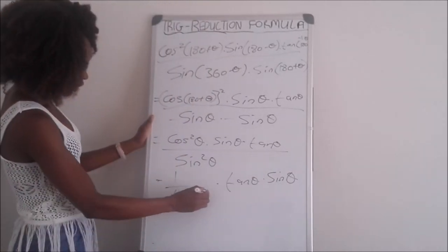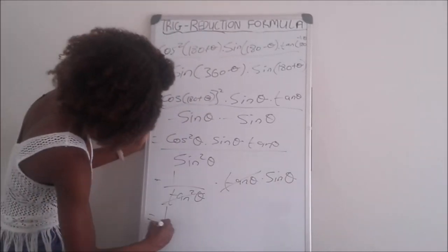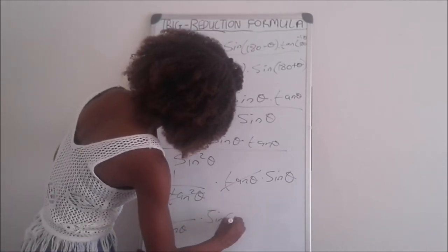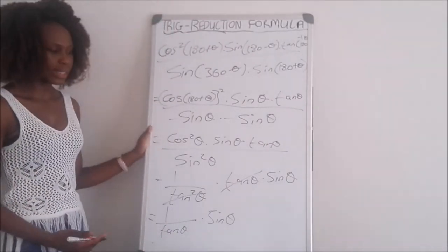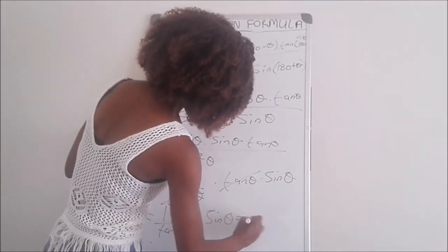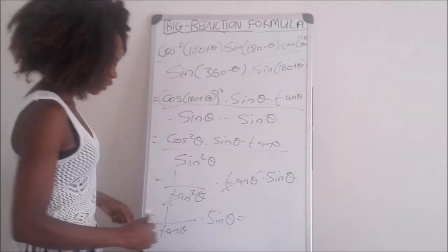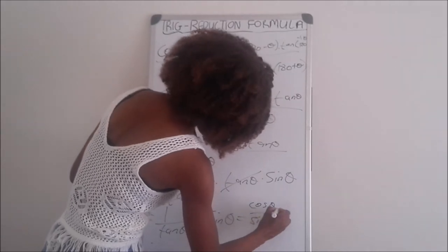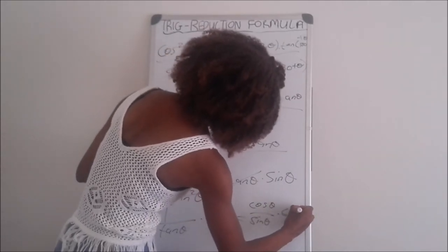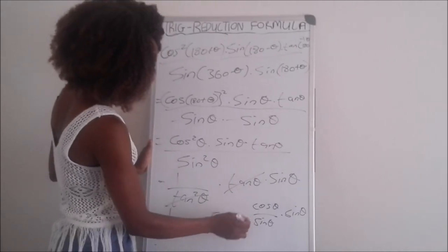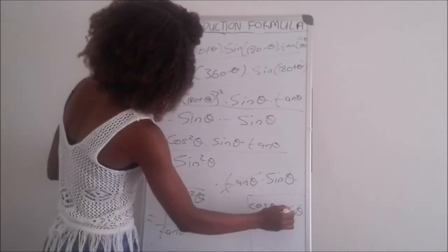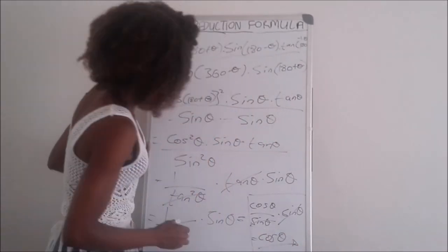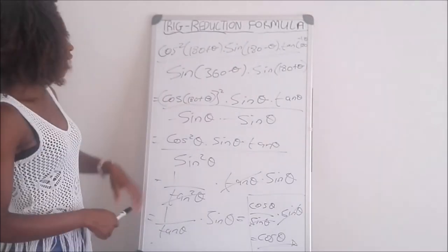The tan squared theta and tan theta simplify: 1 over tan squared theta times tan theta gives 1 over tan theta. Then 1 over tan theta equals cos theta over sine theta, multiplied by sine theta. The sine theta terms cancel and we are left with cos theta.